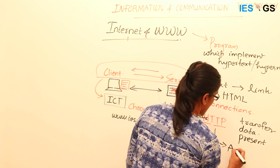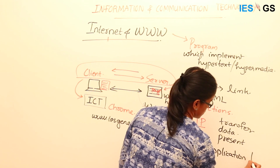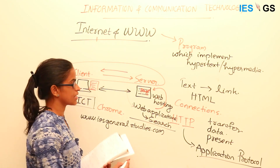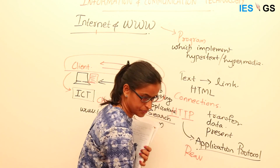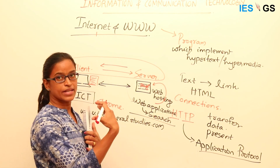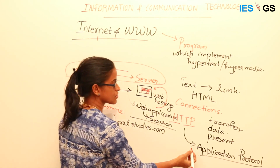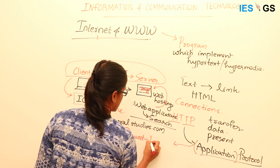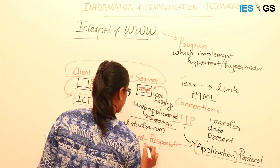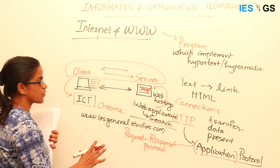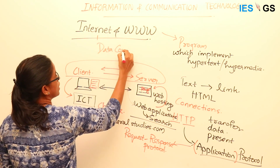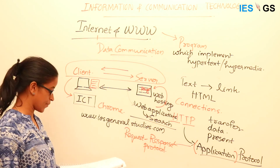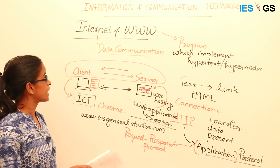HTTP can be called an application protocol because it is a request-response protocol. It works on the application layer — the layer where the user interacts with the internet. This application has a user interface and is also called a request-response protocol. HTTP is the foundation for data communication in WWW, and it works on a client-server model.